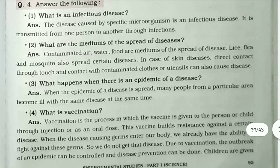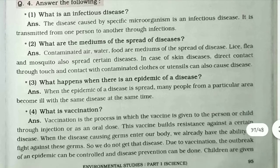What happens when there is an epidemic of a disease? When an epidemic spreads, many people from a particular area become ill with the same disease at the same time.